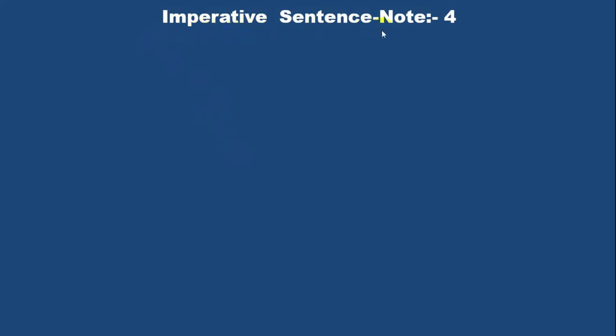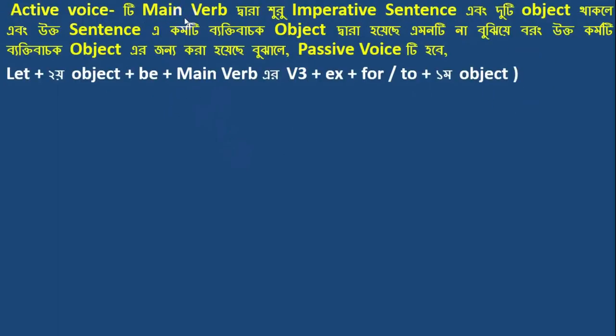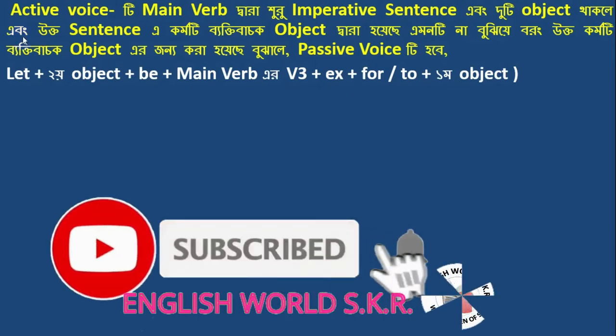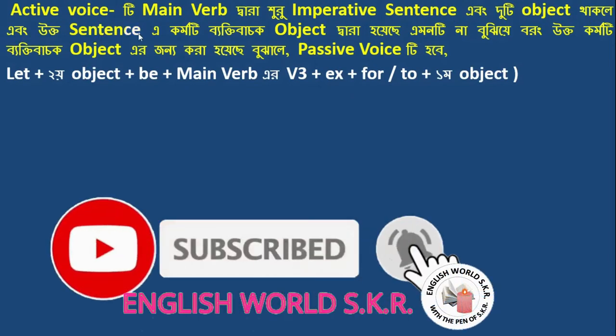Dear learners, today we will learn how to change active voice into passive voice of imperative sentences. In active voice, the sentence starts with the main verb. An imperative sentence may have an object or two objects.